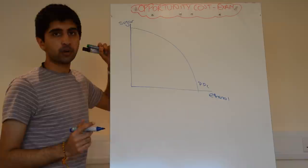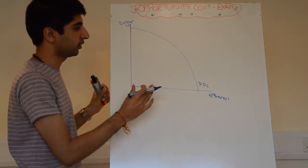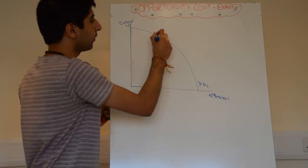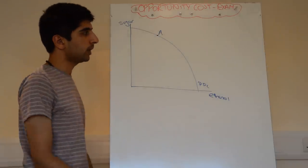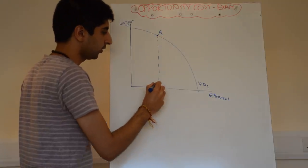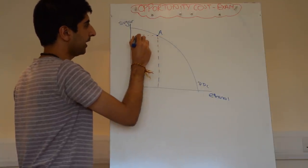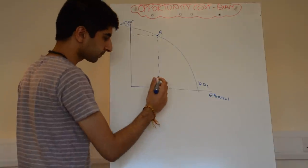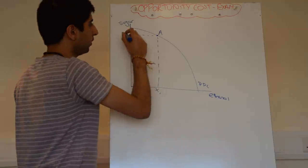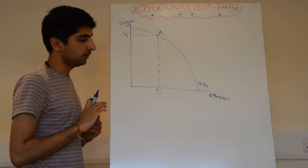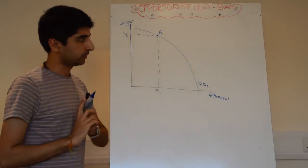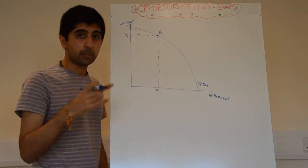Now we need to show opportunity cost. How is that relevant for a sugar cane processor using a PPC? Well, to start with, pick a point on the curve. Call that point A. So you pick a point and label it. As soon as you've done that, go down to your axis — dashed lines to both axes. And then label the points on the axis. Label this one X1. Label that one Y1. X for X-axis, Y for Y-axis. X1, Y1 — logical.